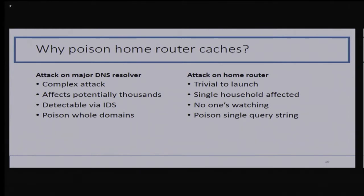You might ask why a bad guy would ever want to attack a home router in the first place. There are clear trade-offs between attacking a home router and a shared resolver. First, attacks like the Kaminsky vulnerability are complex against shared resolvers, whereas attacking a home router is actually quite trivial — pretty much anybody could do it. Second, when attacking a home router, the only potential victims are the household, whereas attacking a major shared resolver could yield thousands of victims. That comes with a downside though: most of the time, attacking popular shared resolvers has a good chance of detection, because they're not dumb. But when you're attacking a home router, no one's watching. Finally, thanks to the Kaminsky vulnerability, it's possible to poison whole domains when attacking shared resolvers, but because home routers don't handle delegation records, an attacker can only poison a single domain name at a time.